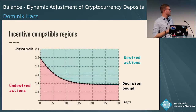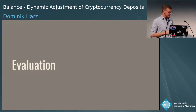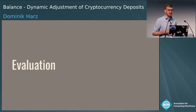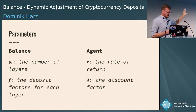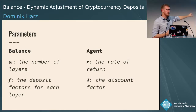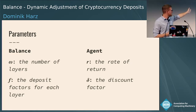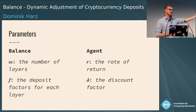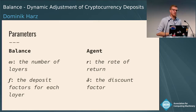We need to carefully set this decision bound. In the evaluation, we look at how the four parameters affect the collateral factor. Two are set in the Balance protocol: the total number of layers and the deposit factor per layer. Two are subjective to the agent: the opportunity cost (how much the agent can earn elsewhere) and the discount factor (how much future earnings are discounted).